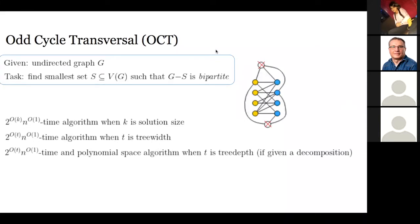An obvious choice is to parameterize by the solution size. We then have an algorithm running in time 2^O(k) times poly(n) which detects solutions of size at most k. Another choice is to consider some graph measure such as tree width or tree depth, and for both of these parametrizations we have efficient FPT algorithms solving OCT.